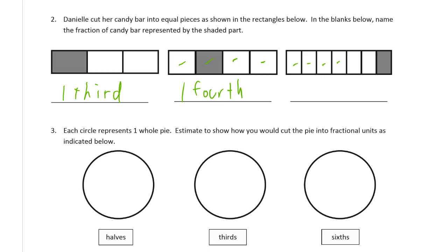And then this one is one, two, three, four, five, six, seven parts, so there's sevenths, and there's one shaded in, so it's one seventh.